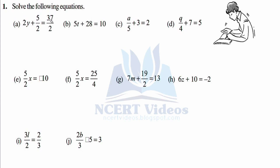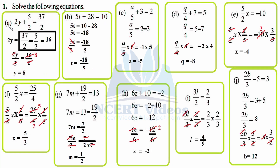Question 1: Solve the following equations. You have to solve these equations by transposing what you've learned in this exercise — separate the variable and then solve the equation further. So let's do it. Part a: 2y plus 5 by 2 equals 37 by 2.